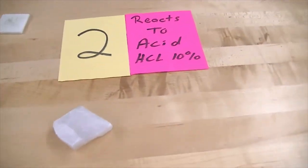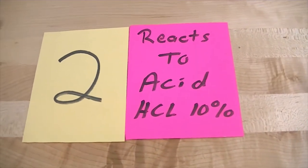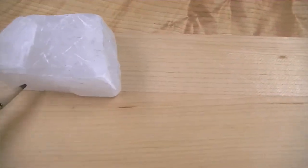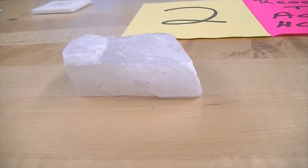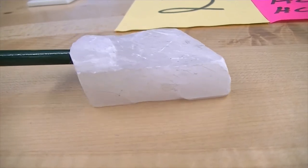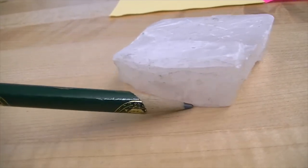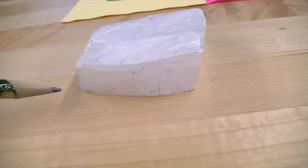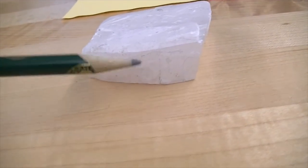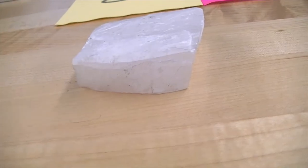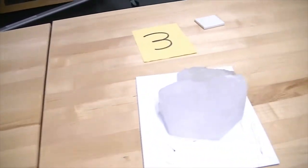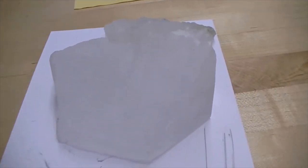Number two reacts to hydrochloric acid, has 60-120 degree cleavage, and this is calcite — a really important rock-forming mineral for sedimentary and metamorphic rocks. One of the primary minerals found in marble is calcite.